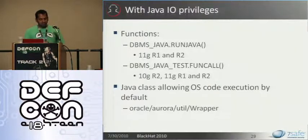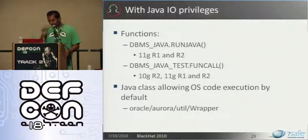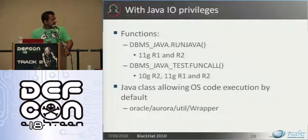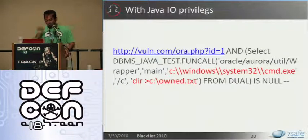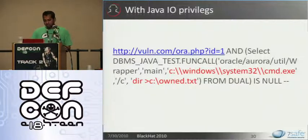Moving on — if your SQL injection is such that whatever code you are injecting runs as a user with Java IO permissions, then you can execute OS code on an Oracle database. You can do that in 10GR2, 11GR1, and 11GR2 by calling two functions: runjava and funcall. Both these functions take an Oracle class as an argument and a method of that class which allows OS code execution. By default, the Oracle class Aurora util wrapper allows OS code execution within the main method. All you do is basically call dbmsjavatest.funcall and pass the Oracle class and whatever code you want to execute. The limitation is that you need Java IO permissions — without them you cannot execute that class.